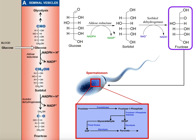For sorbitol, one key application is in the seminal vesicles. Glucose has one of two fates: it can go into glycolysis or the pentose phosphate pathway, or it can go into the polyol pathway. Aldose reductase reduces glucose to sorbitol, and then sorbitol dehydrogenase oxidizes the second carbon of sorbitol into a ketone, giving us fructose. The reason the seminal vesicles need to generate lots of fructose is that sperm cells — spermatozoans — metabolize exclusively fructose, not glucose.